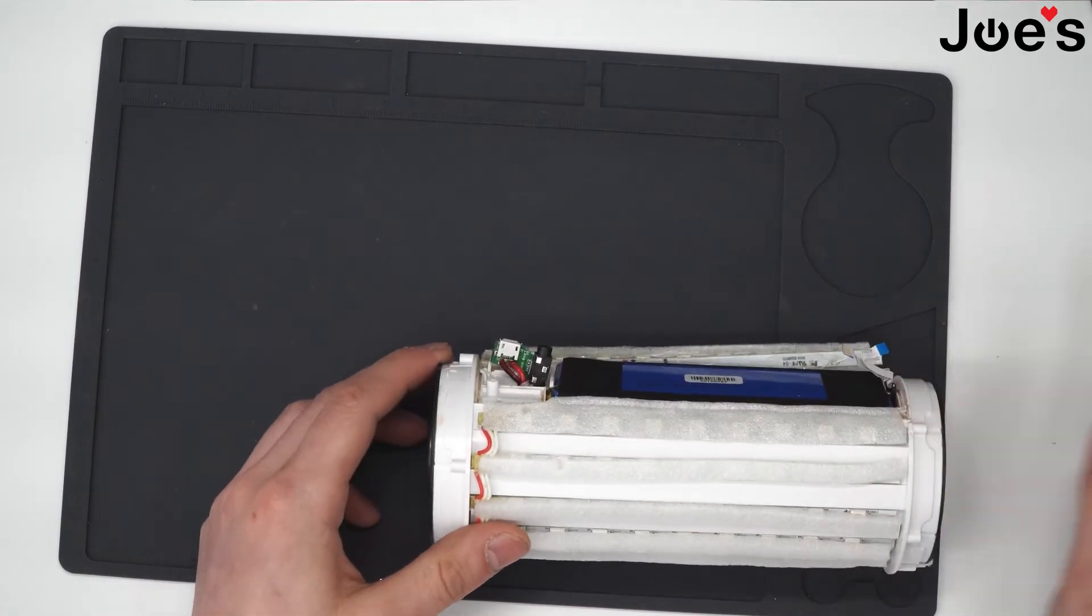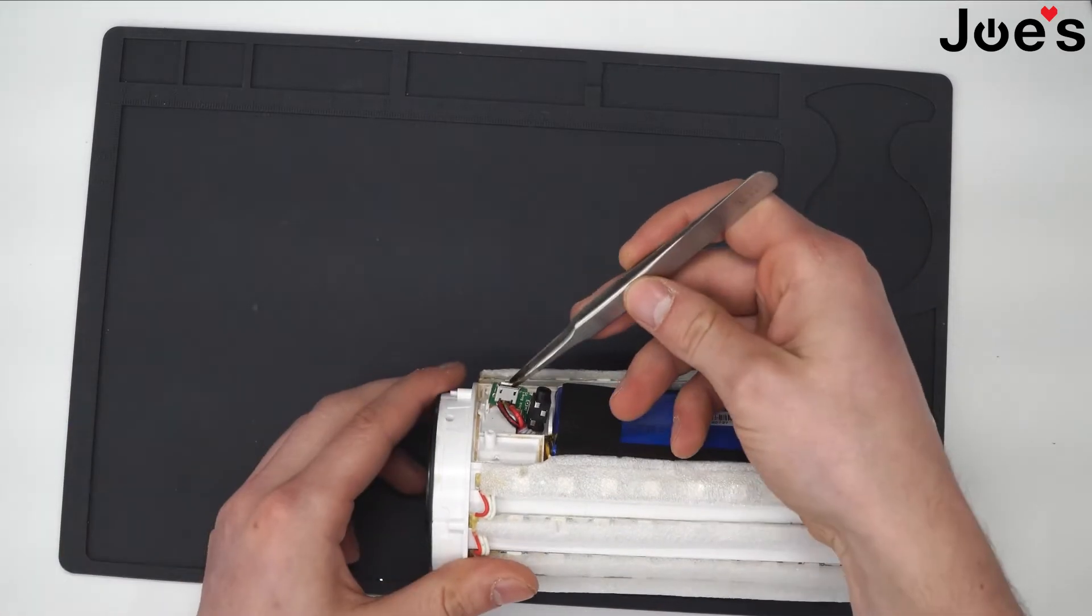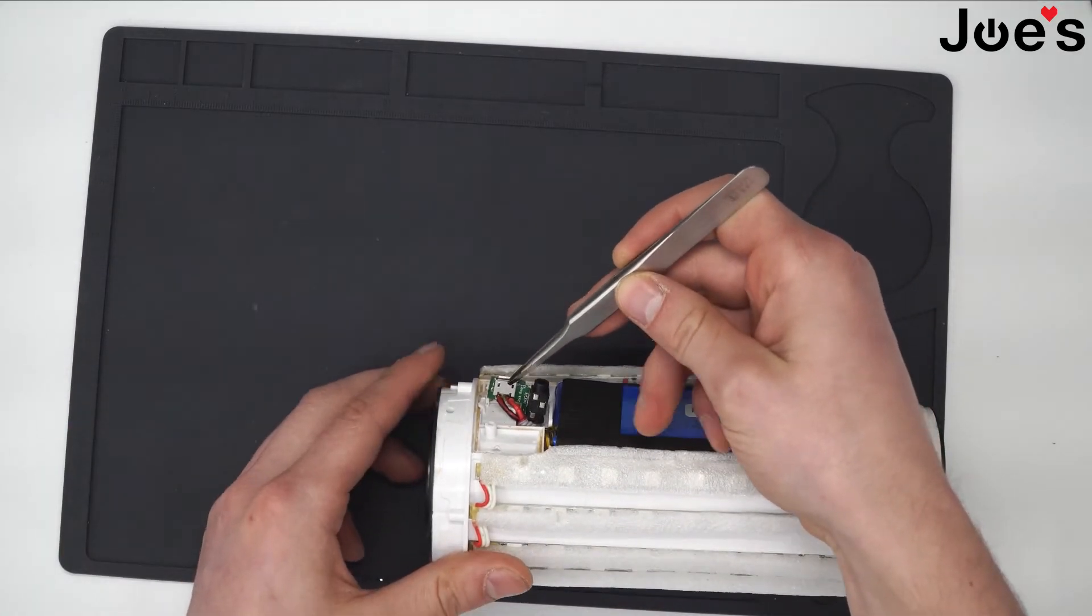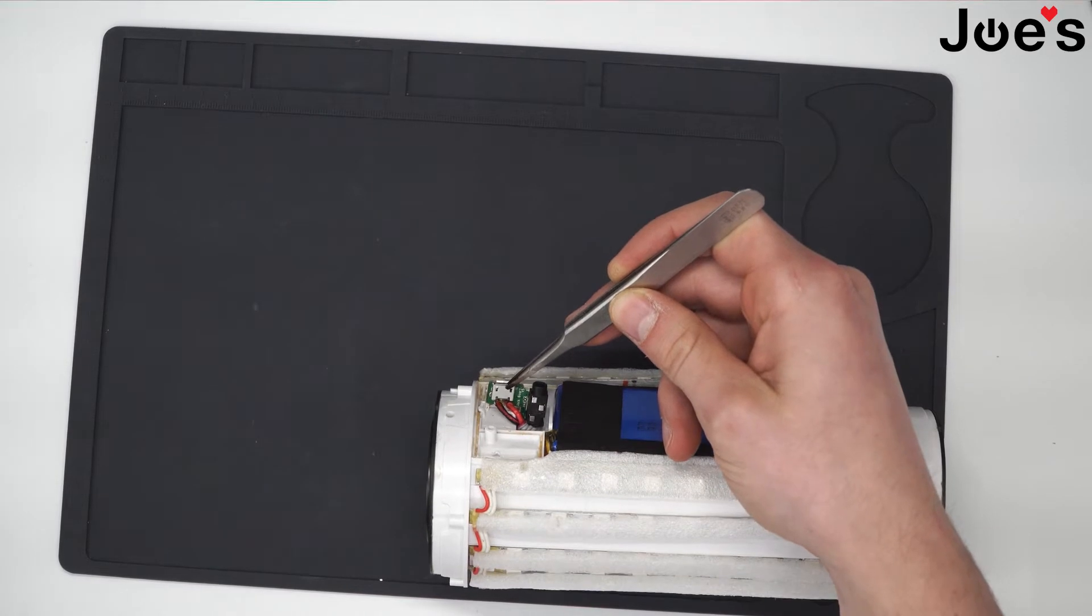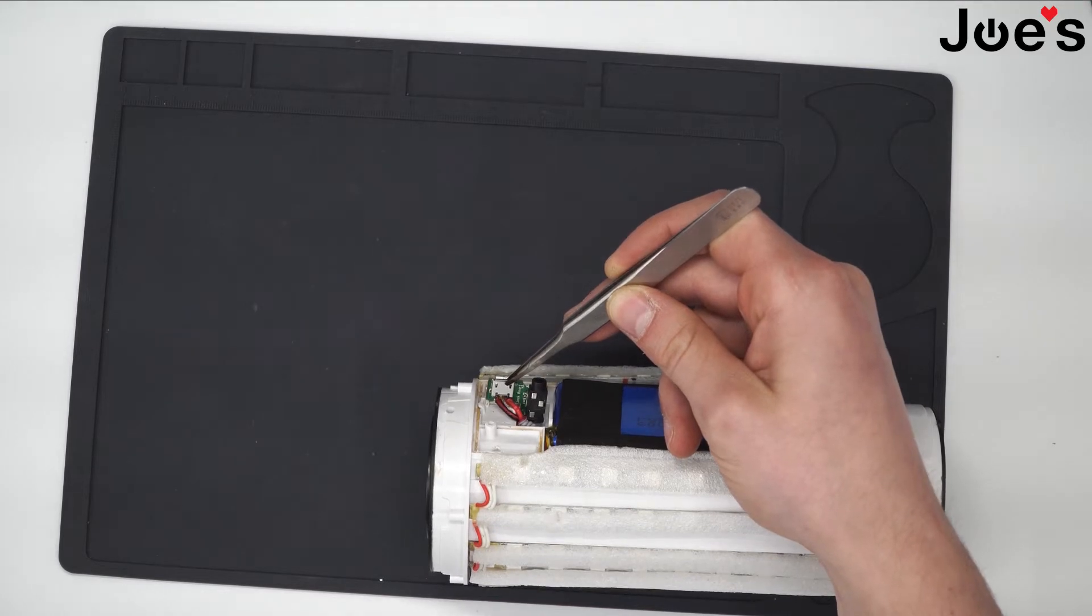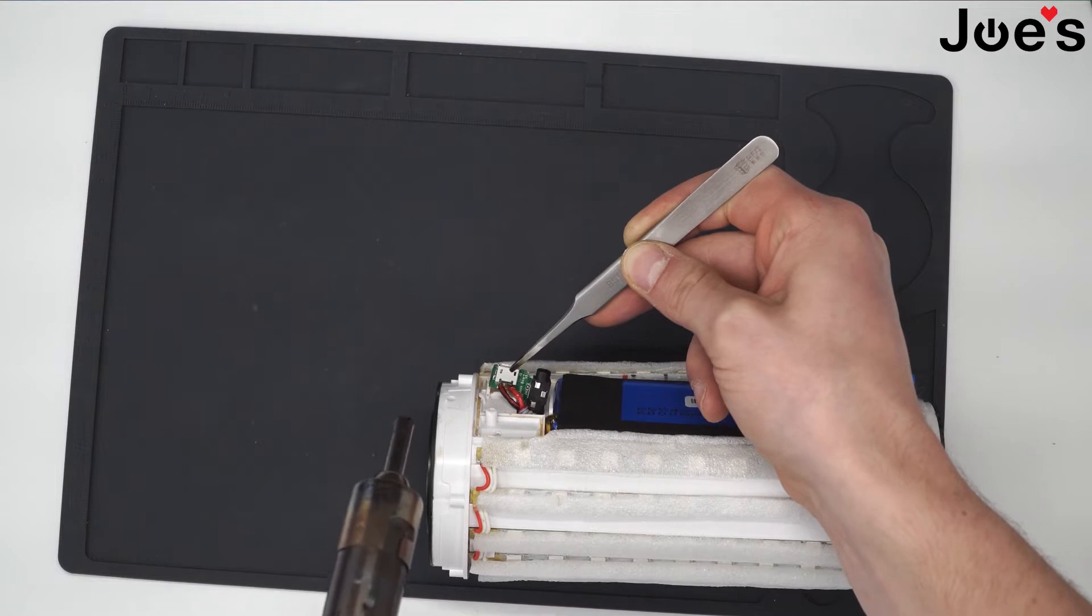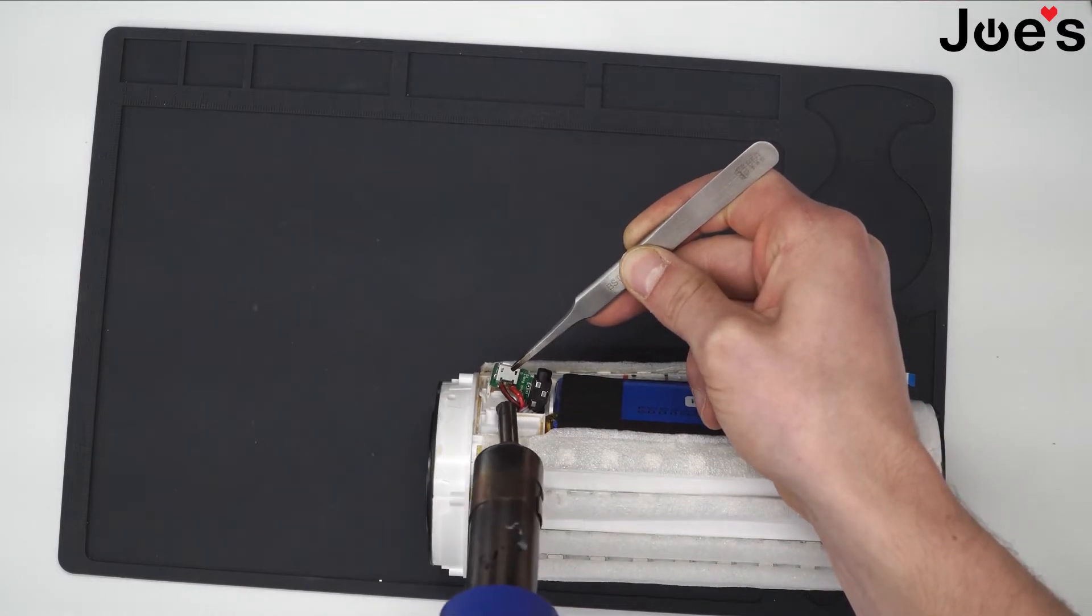First, I grab tweezers to hold the port and use my hot air gun. I have the temperature at 850 degrees Fahrenheit - you can adjust that plus or minus - and I have around 50 percent air. This should be hot enough, so we can start heating it up.